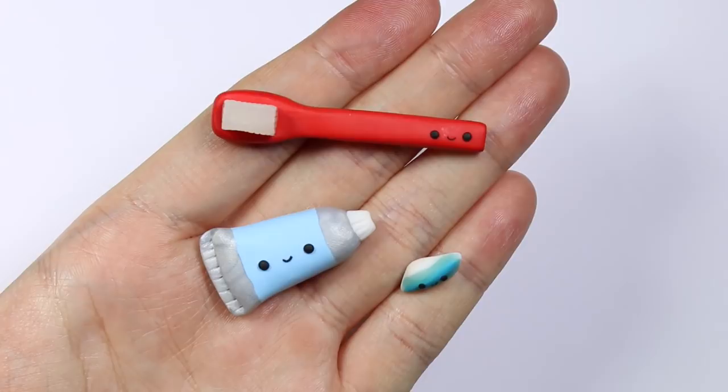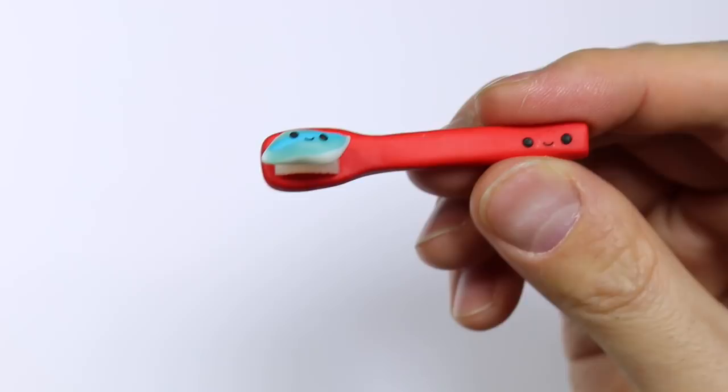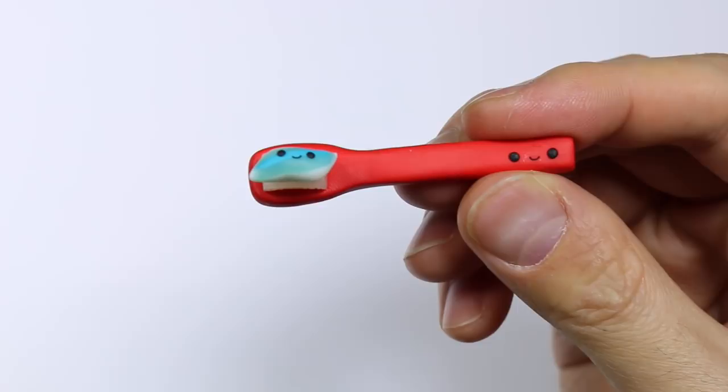Once you have your toothbrush in hand, add a little bit of toothpaste, a pea size is good. That's not a pea size, but it's okay. So you have your tooth.